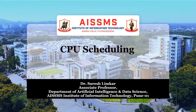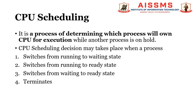Let's see CPU scheduling concepts of operating system. CPU scheduling is a process of determining which process will hold a CPU for execution while another process is on hold. CPU scheduling decisions may take place when a process switches from running to waiting state, from running to ready state, from waiting to ready state, or when it terminates. During these four scenarios, the CPU scheduling decision may be taken.